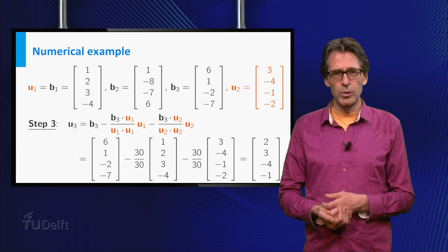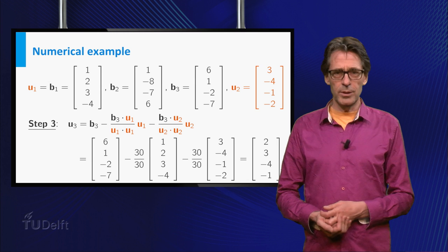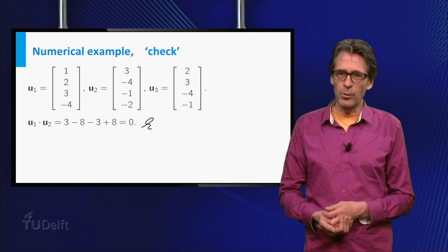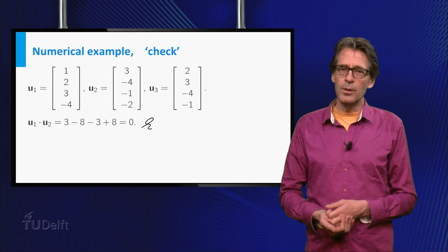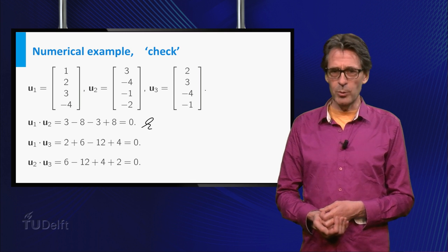The three vectors u1, u2, u3 give an orthogonal basis. I already checked the orthogonality of u1 and u2. The other two inner products are quickly seen to be zero as well.